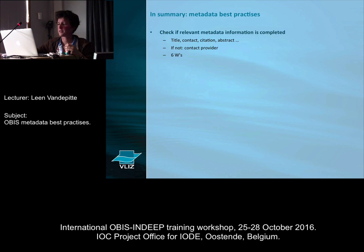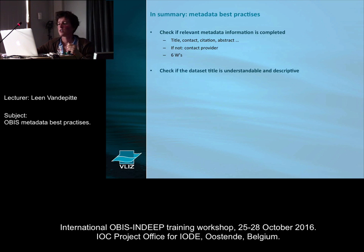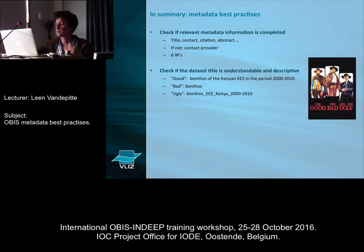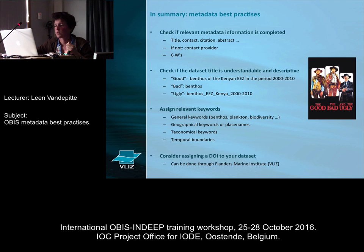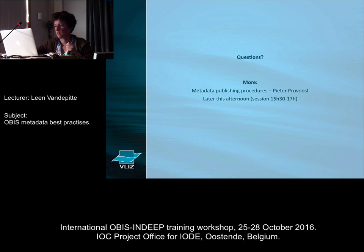In summary on the metadata: check if the relevant metadata is there — title, contact, citation, and so on. Remember the six W's to go through all the information. Check if the dataset title is understandable and descriptive. Thinking about the good, the bad, and the ugly: good descriptive titles, bad ones that don't say anything, and ugly ones that say what the dataset is about but don't say it nicely — for example using underscores throughout. Make sure keywords are assigned, and consider assigning a DOI to your dataset. That was it on the metadata.